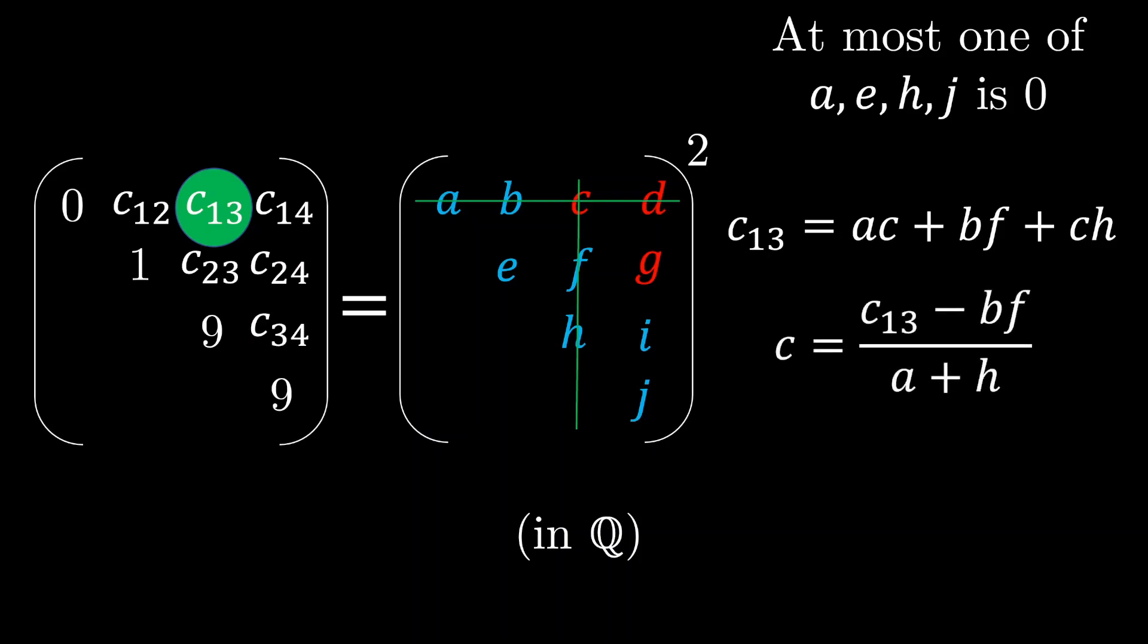And again, we can write c as a rational function of terms we already know in rational numbers, dividing in the denominator by something that is bigger than zero. So we indeed again solve that c is a rational number.